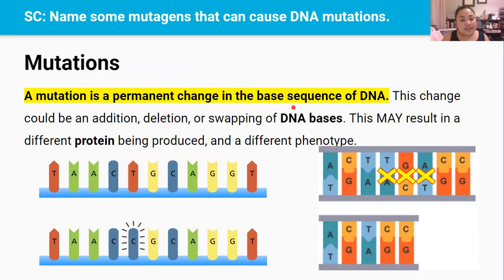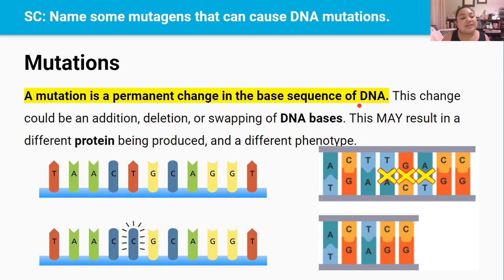A mutation is a sudden permanent change in the base sequence of DNA in an organism. A mutation can be relatively small and within the scale of a gene, or the changes could actually be really large and in the scale of a chromosome. In level 2 biology we tend to focus on the small scale changes or mutations within a gene. These small scale changes may be an addition, a deletion, or swapping of bases, which may result in a different protein being produced.